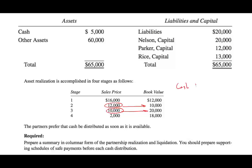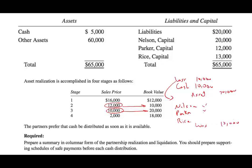For sale three with a loss: debit cash $10,000, debit loss $10,000, and credit the asset for $20,000. Then they have to allocate this loss to the three partners in their respective ratios — debit Nelson's capital, debit Parker's capital, and debit Rice's capital, then credit the loss for $10,000.